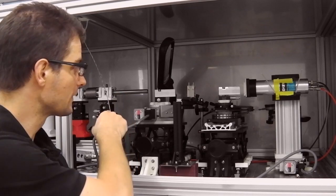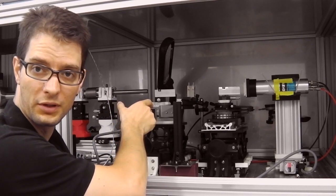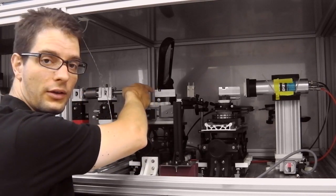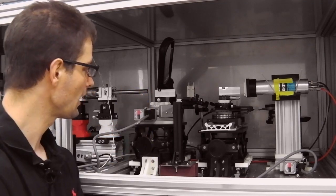After the first collimation section we have our first channel cut crystal, which sits right over here on top of a rotation. This crystal acts as an angle filter.